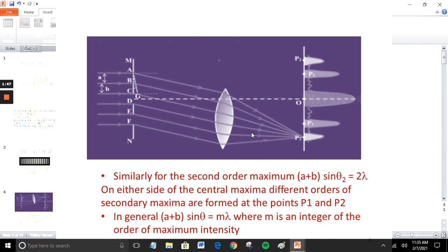Similarly, for the second order maximum, (A + B) sin theta_2 equals 2 lambda. In general, (A + B) sin theta equals M lambda, where M is an integer of the order of maximum intensity.